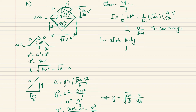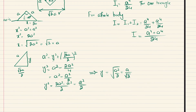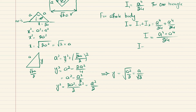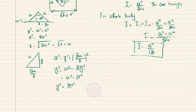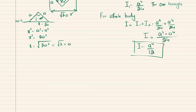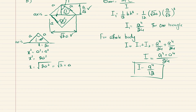For the total moment of inertia of the whole body (both triangles), I_total = I₁ + I₂ = a⁴/24 + a⁴/24 = 2a⁴/24, which simplifies to I = a⁴/12. Notably, this is the same moment of inertia as orientation A.